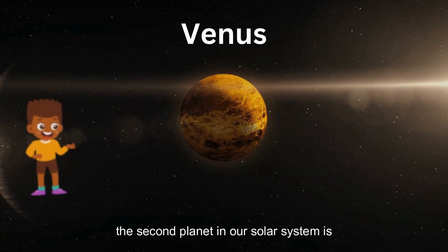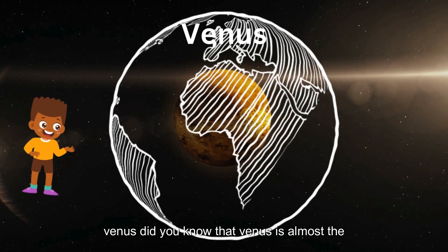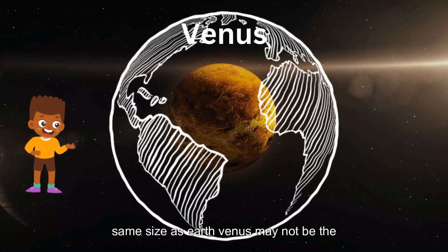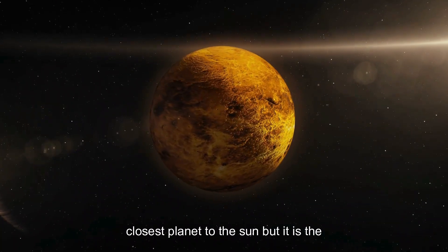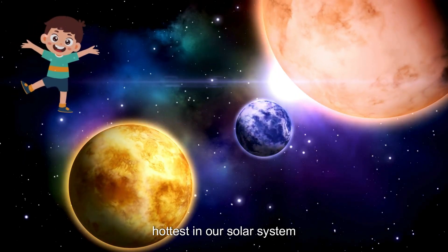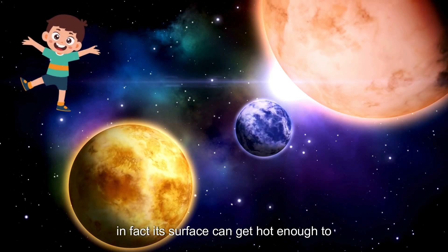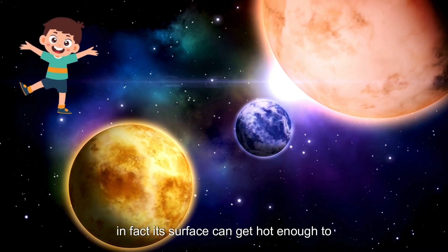The second planet in our solar system is Venus. Did you know that Venus is almost the same size as Earth? Venus may not be the closest planet to the Sun, but it is the hottest in our solar system. In fact, its surface can get hot enough to melt lead.